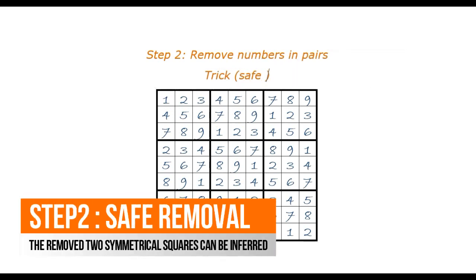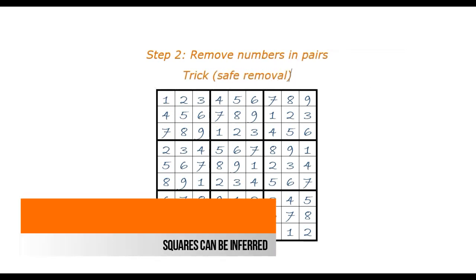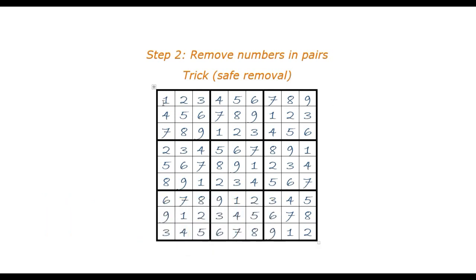First step: we do safe removal. Every time we remove two numbers from two symmetrical squares, as long as the removed numbers can be inferred, it's a safe removal.